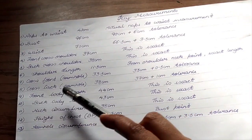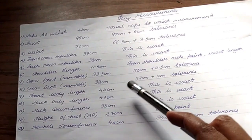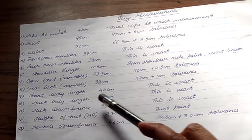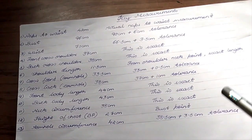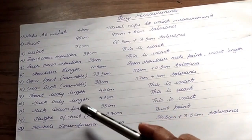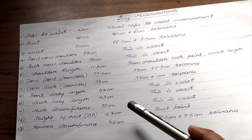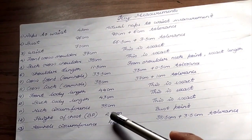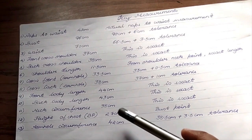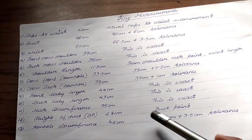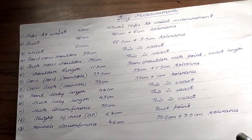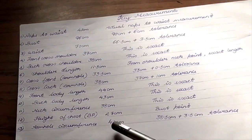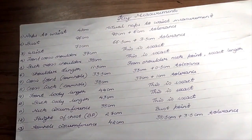Front body length is 44 cm — exact. Back body length is 43 cm — exact. Neck circumference is 38 cm — exact. Height of chest bust point is 27 cm. Armhole circumference is 38.5 cm, add 3.5 cm tolerance, so the total is 42 cm.